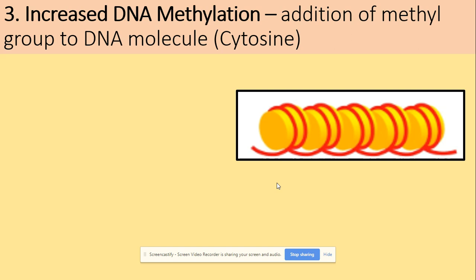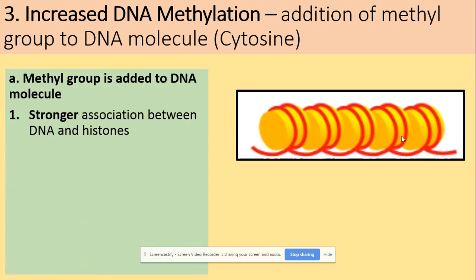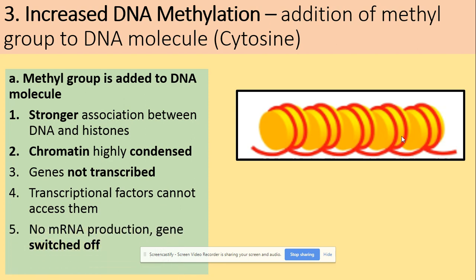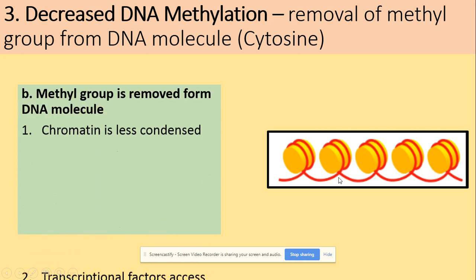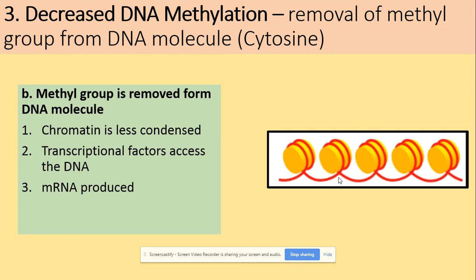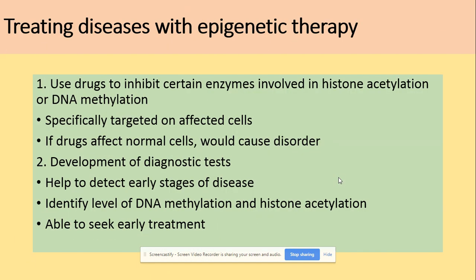Increased DNA methylation is the addition of a methyl group to the DNA molecule, specifically to the cytosine base. Once added, it makes the complex more condensed, so transcription does not take place, the gene is off, and mRNA is not produced. Decreased DNA methylation — removal of the methyl group from DNA — has the same effect as increased acetylation: the gene becomes active, transcription can take place, and mRNA is produced.